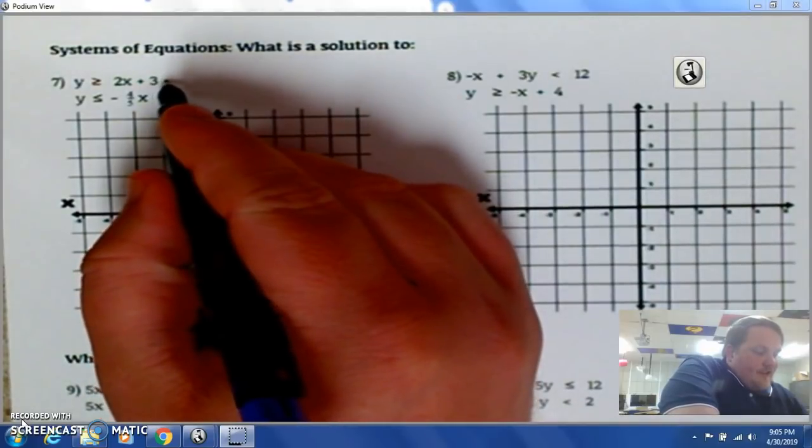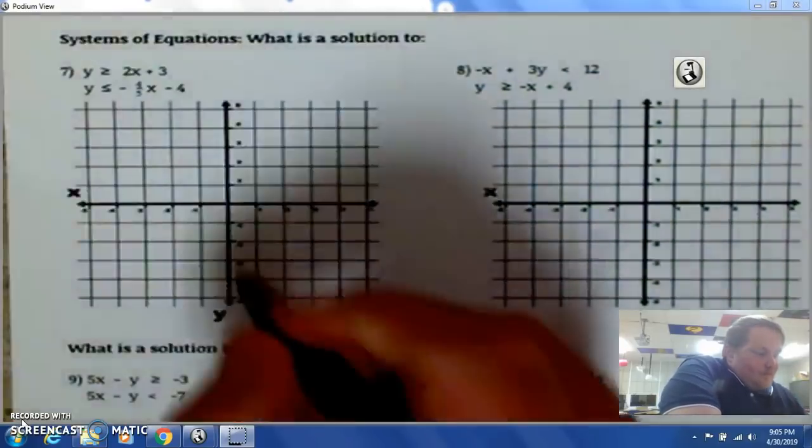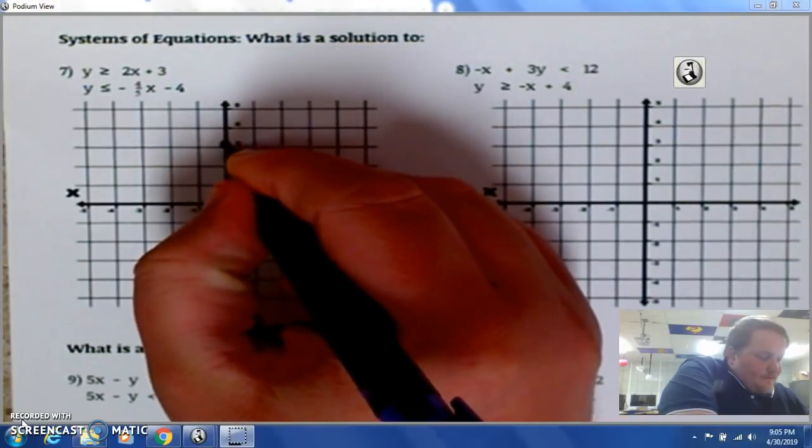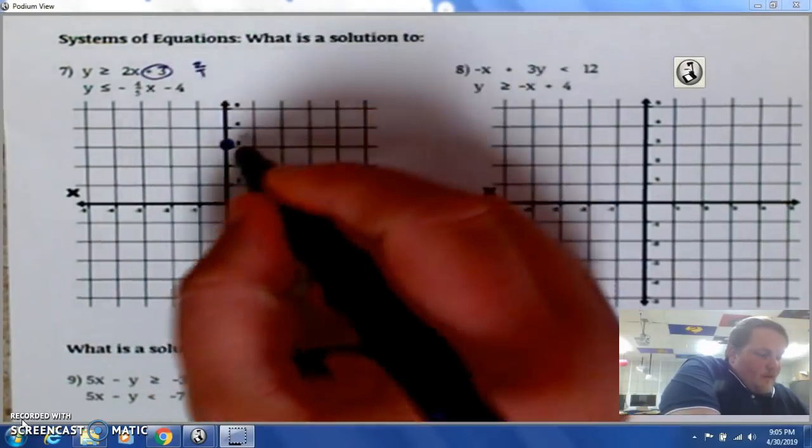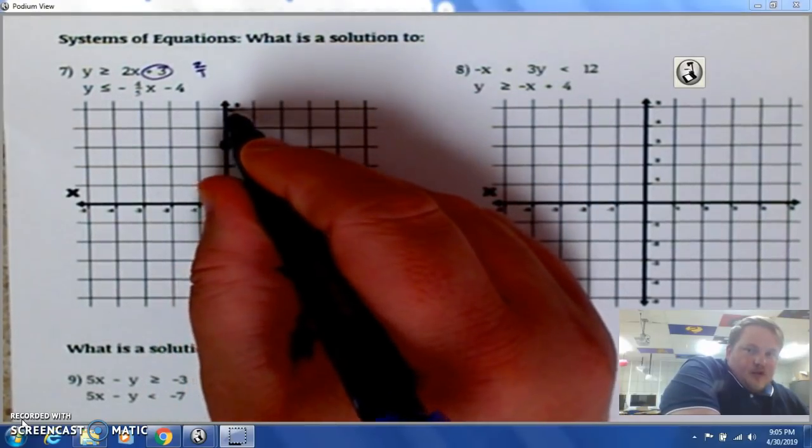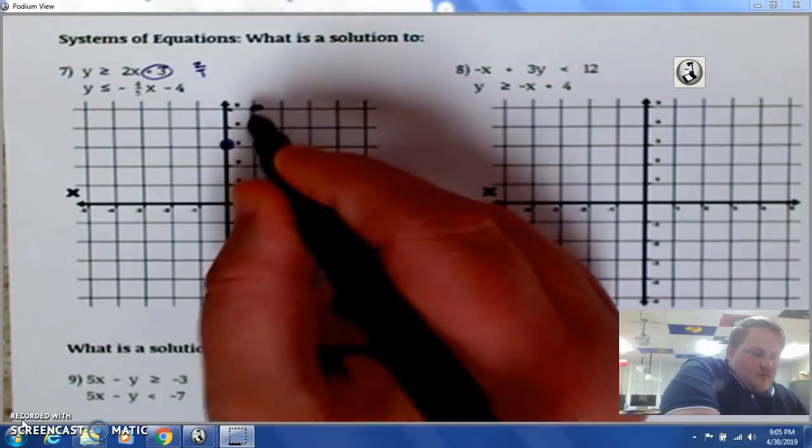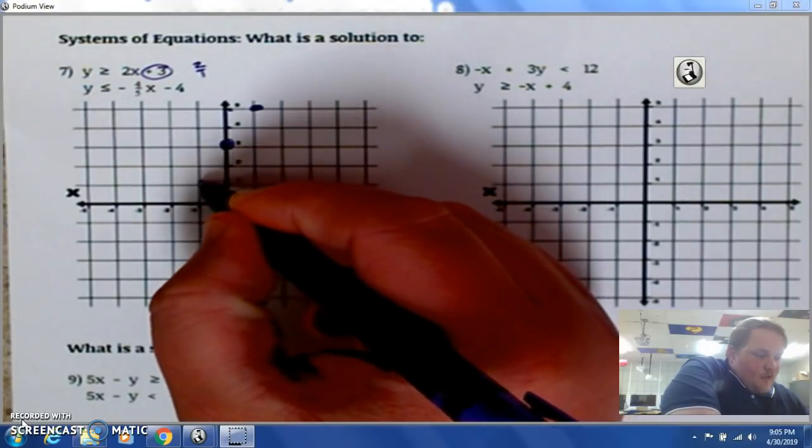So. Positive. We'll graph this one first. In purple. Starts at positive 3. Because, that's my y-intercept. My slope is 2. So, it's 2 over 1. Means, I go up 2. And, over 1. I go down 2. And, over 1.